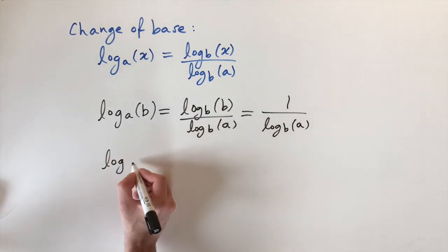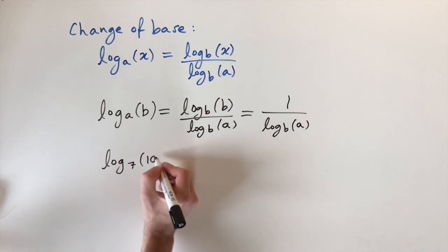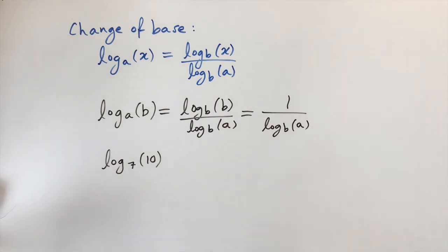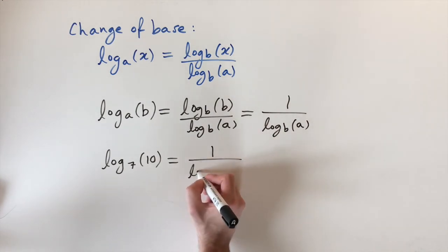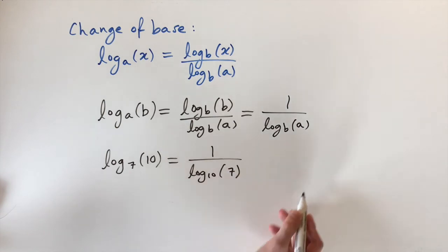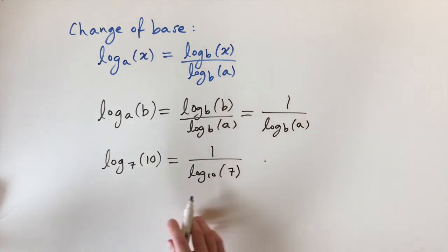So let's just look at an example of using this. If we have log to base 7 of 10, and like we were saying before, maybe base 10 is easier to calculate in, then we can switch it to base 10 by using this where it's 1 over log to the base 10 of 7. And this might be a lot nicer to calculate, so this is just a little trick you can use from this formula.